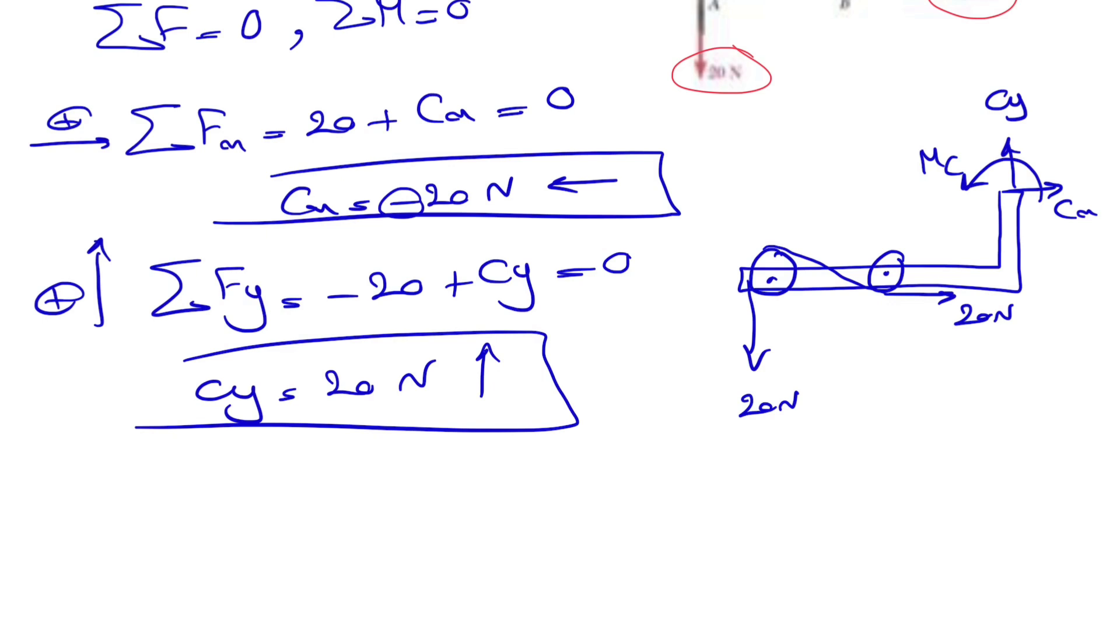The last thing is the moment at the reaction C. We can start finding the moment about point C. Let's see what we have. For the moment about point C, we have the moment of this 20 Newton force. As we can see, the moment is counterclockwise, and we have to find the distance to the line of action.